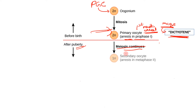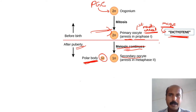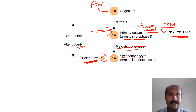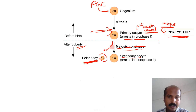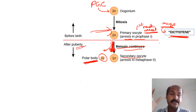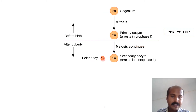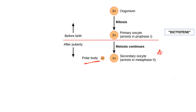When the first meiotic arrest is released, meiosis one continues to form a secondary oocyte and a structure called the first polar body. This is a big difference from spermatogenesis, where one primary spermatocyte divides into two similar secondary spermatocytes. Here, instead of two equal cells, there is clear asymmetry — the cytoplasm is mainly shunted into one cell while very little goes to the other, which is why it is called a polar body. This phenomenon is called asymmetric cytokinesis.